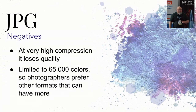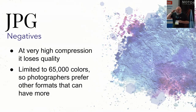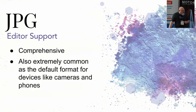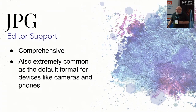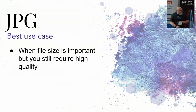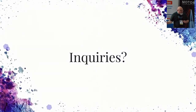Negatives: at very high compression it loses quality — but that's not really a negative, just don't compress it that much if you don't want to lose quality. It is limited to 65,000 colors, which was amazing when it came out but photographers now want more. Editor support is comprehensive — everything supports JPEG, it's the default format for digital cameras and almost every cell phone. Best use case: when file size is important but you still require high quality.